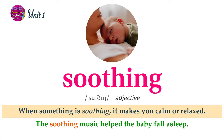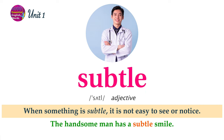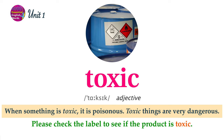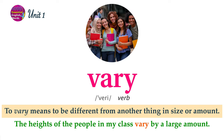When something is soothing, it makes you calm or relaxed. The soothing music helped the baby fall asleep. When something is subtle, it is not easy to see or notice. The handsome man has a subtle smile. The texture of something is the way its surface looks and feels. The texture of a rock found in the water is typically very smooth. When something is toxic, it is poisonous. Toxic things are very dangerous. Please check the label to see if the product is toxic. To vary means to be different from another thing in size or amount. The heights of the people in my class vary by a large amount.